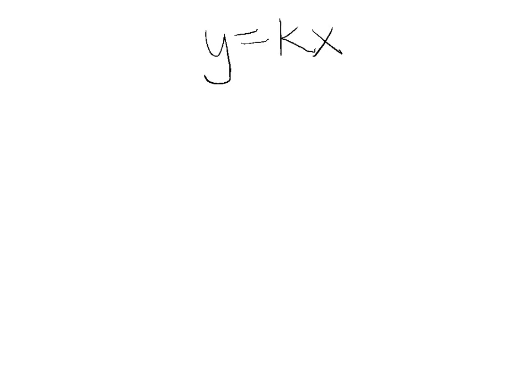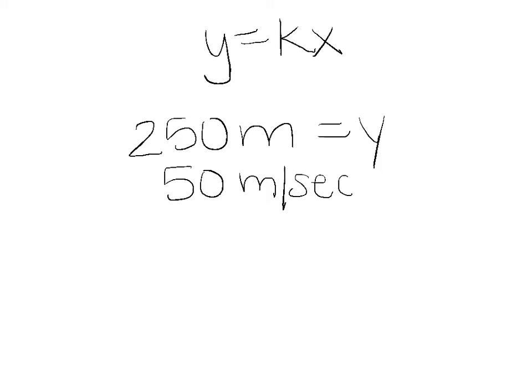Next, we are going to substitute in for each variable. In the word problem, we were given 250 meters, so that will be our y. We are given a rate of 50 meters per second, so that will be our k. x is what we are trying to find.